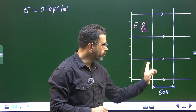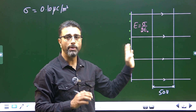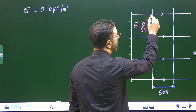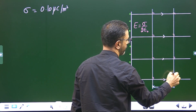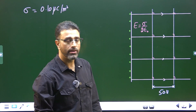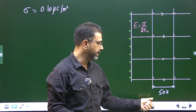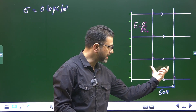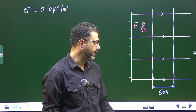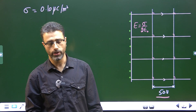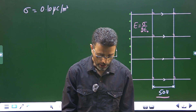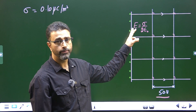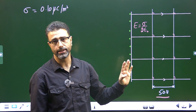Now, suppose these are the two equipotential surfaces. Remember, equipotential surfaces are always perpendicular to the field. The physical separation between the two is what we have to find out. The potential difference is given as 50 volts. Our plan is very simple: we will first find the electric field, then use the equation relating potential difference and electric field.